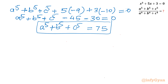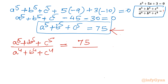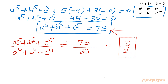Now the task is done. I only need to put in the values: (a⁵+b⁵+c⁵) / (a⁴+b⁴+c⁴). The sum of fifth powers was 75 and the sum of fourth powers was 50, so the answer becomes 75/50 = 3/2. This is our final and ultimate answer.